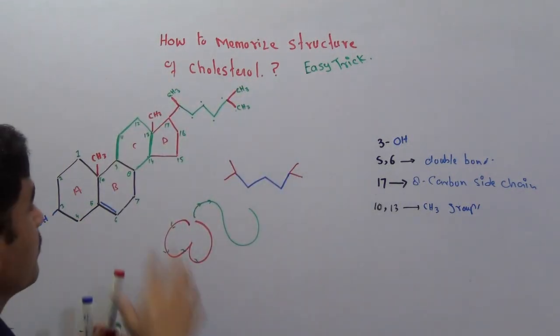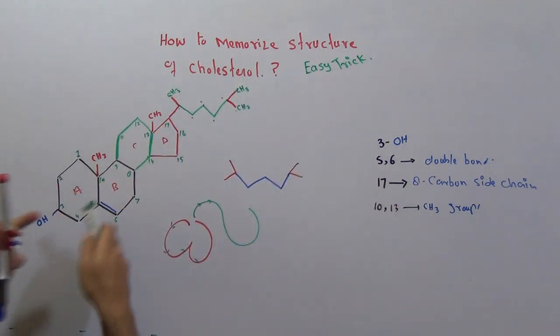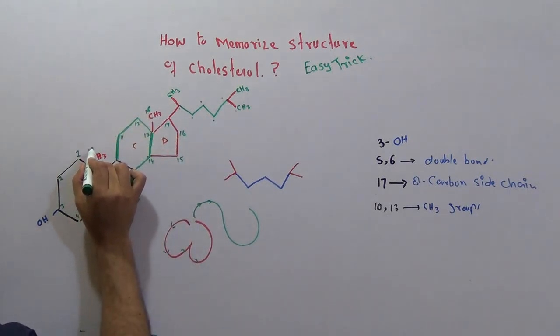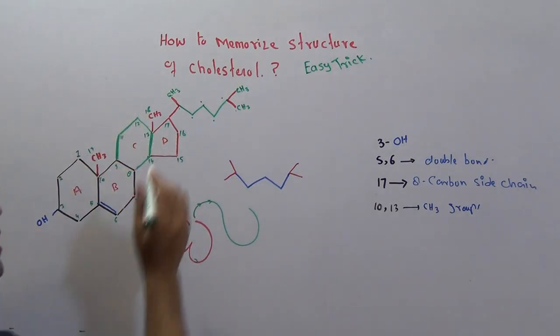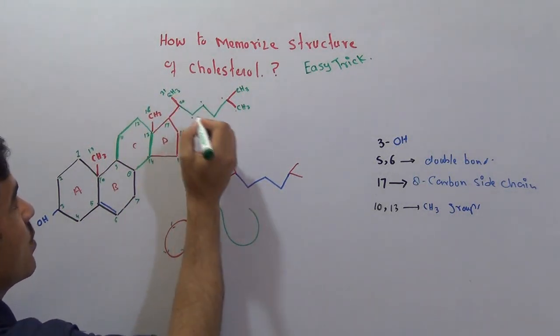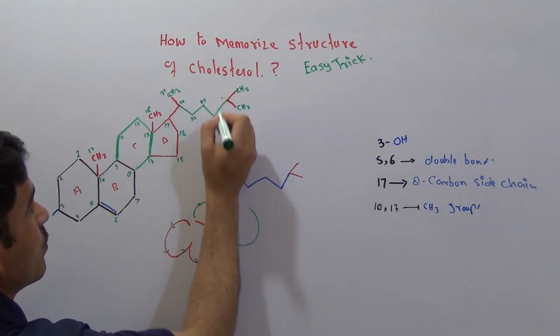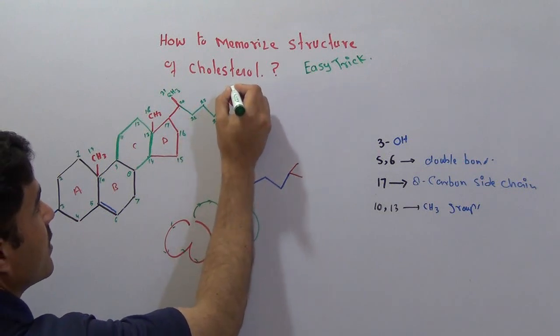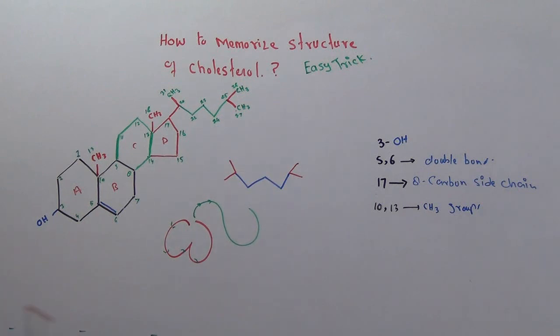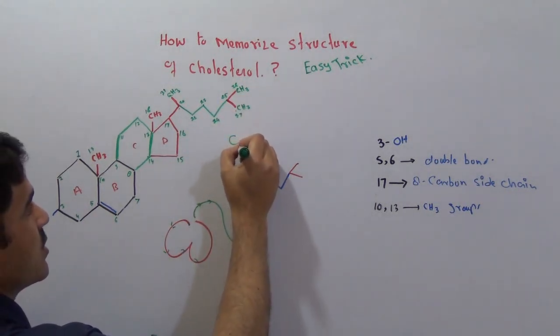Now you can just give numbering to that side chain as well. Because if it is seventeen, then this carbon will be eighteen and this carbon will be nineteen. This corner will be twenty, this will be twenty-one, this will be twenty-two, this will be twenty-three, twenty-four, twenty-five, twenty-six, and twenty-seven. So overall we've got twenty-seven carbons. So the formula of cholesterol becomes C27H46 and only single oxygen.